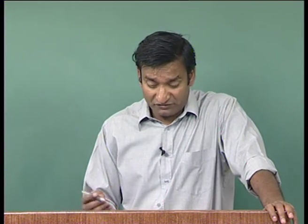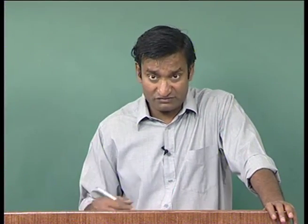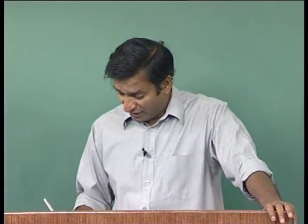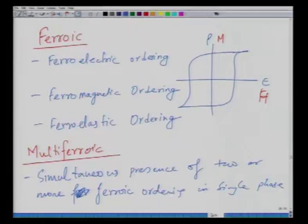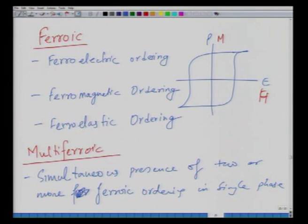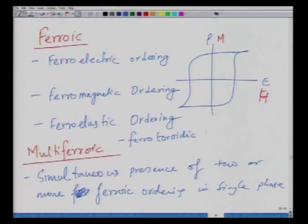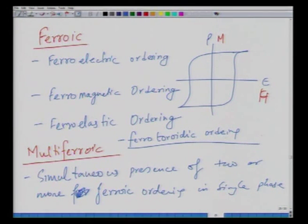There are three different kinds of ferroic orderings, and another ordering recently coined is ferro-toroidic ordering, which has also been thought to exist in these materials.